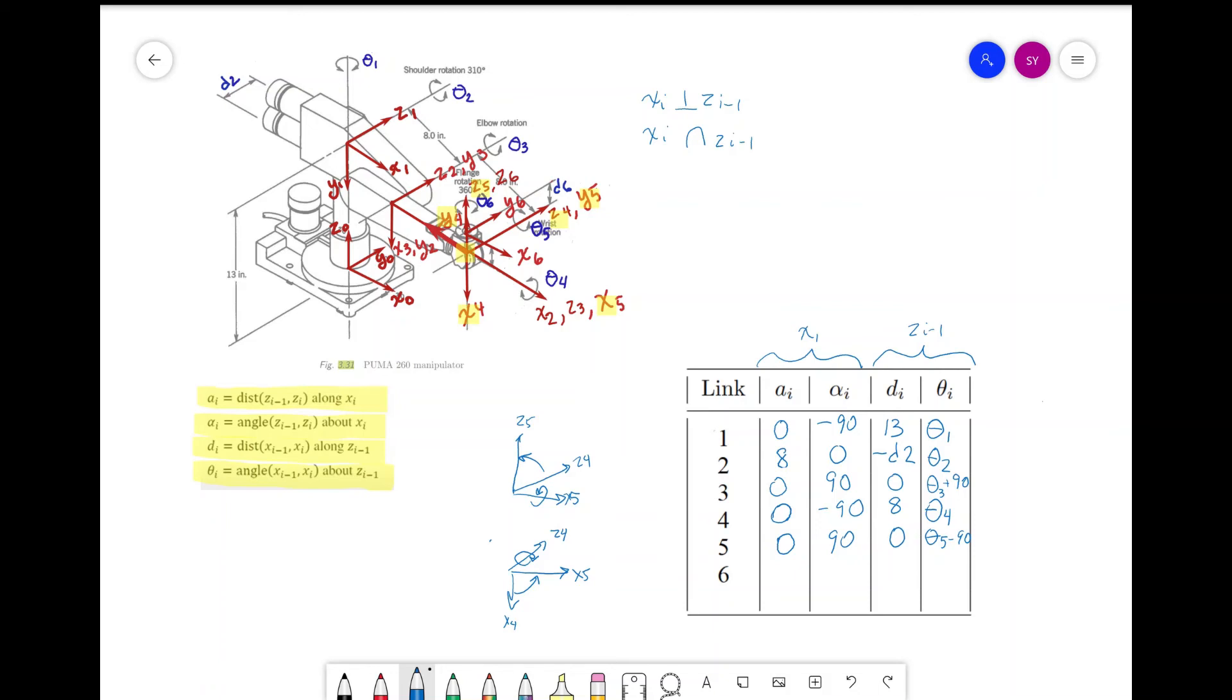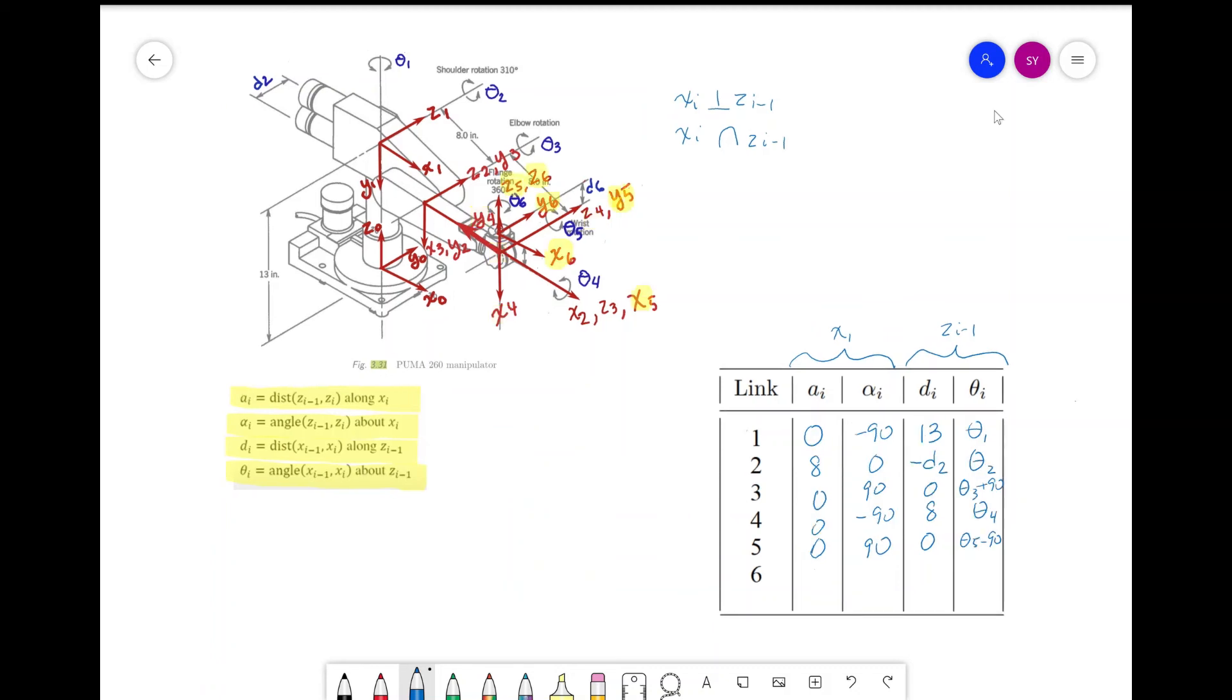Now let's look at link 6. I've highlighted the axis so it's a little easier to see. For a_i, we have for link 6 is 0 because z5 and z6 both have the same origin, so there's no distance between them. For alpha_i, this is also 0 because the z-axis is already aligned. For d_i, we see that there's a distance between x5 and x6 along z5 of d6.